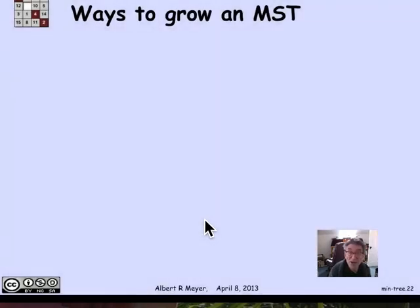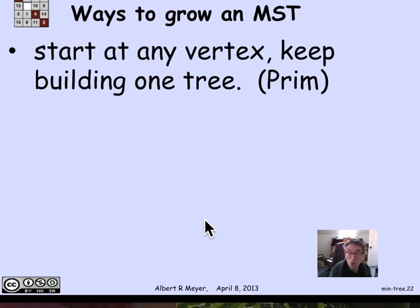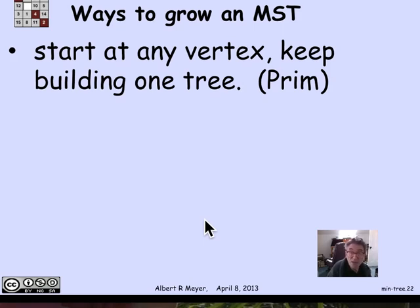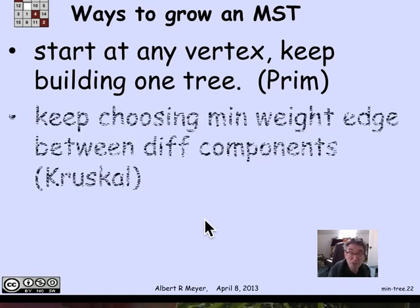There are several ways to grow a minimum weight spanning tree. One way is to start at any vertex, color it black and everything else white, so all gray edges touch that vertex. Pick the minimum weight one, now you have a component with two vertices, color it black and everything else white, and keep growing one component. This is known as Prim's algorithm for growing a minimum weight spanning tree.